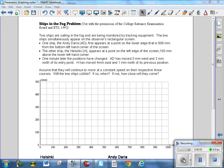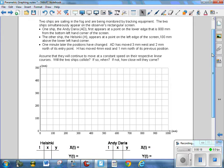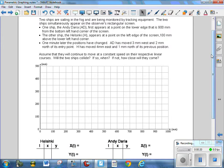This is page 3 of your parametric graphing notes, The Ships in the Fog Problem. Two ships are sailing in the fog and being monitored by tracking equipment, a radar. The two ships simultaneously appear on the observer's rectangular screen. So this grid here represents a radar screen, and notice that its measurements are in millimeters.